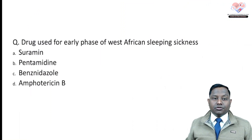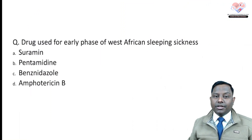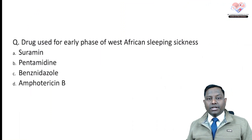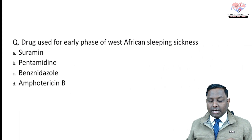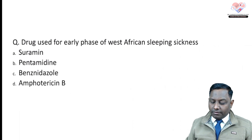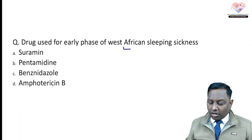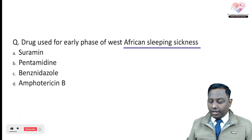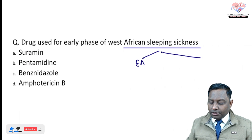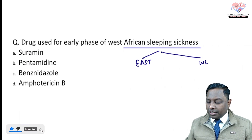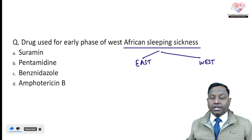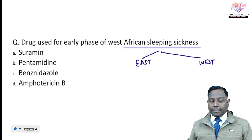The very first question today is: drug used for the early phase of West African sleeping sickness. Remember, whenever they talk about African sleeping sickness, it is of two types — one is East African sleeping sickness and another one is West African sleeping sickness.